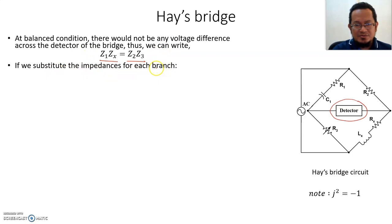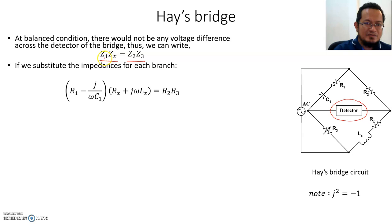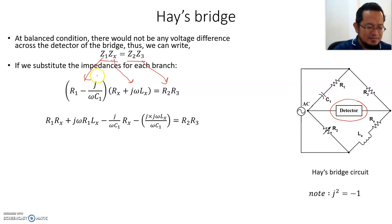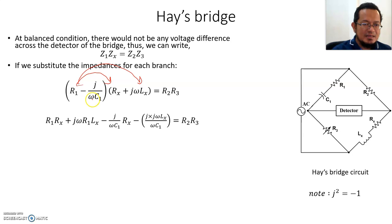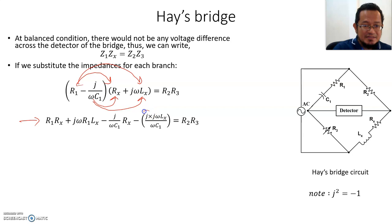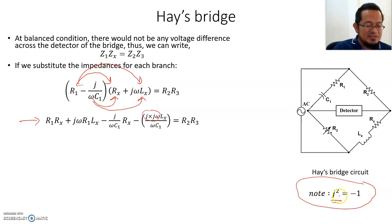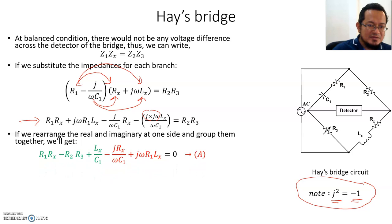This balance condition is the same as for Maxwell's Bridge and all AC bridges. Substituting the impedance for each branch: Z1, Zx, Z2, and Z3. Multiplying out — for example, R1 multiplied by Rx and ωLx — you expand the equation and simplify. Note that j squared equals negative one, so any imaginary parameter squared becomes negative one.